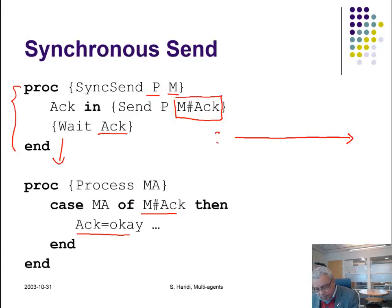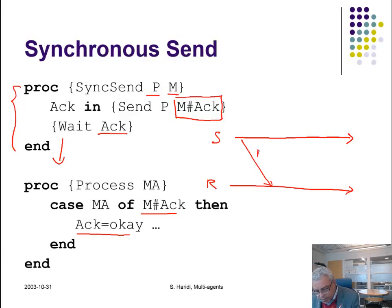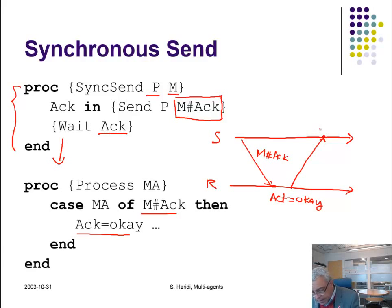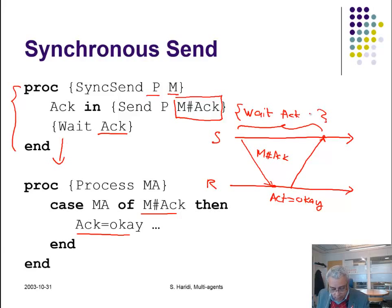This can be depicted as follows. If this is time, here is the sender and here is the receiver. The sender sends a message with M and AC. The receiver binds the variable — AC will be bound to 'okay' — and sends back, or the result of that binding will be visible at the sender sometime after that. The wait statement makes the sender wait on AC for at least this period of time.